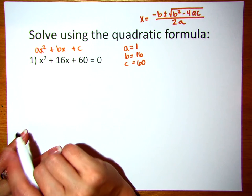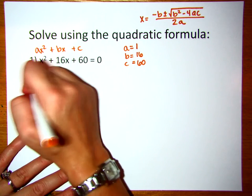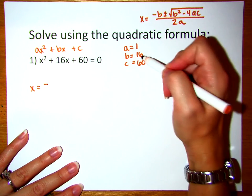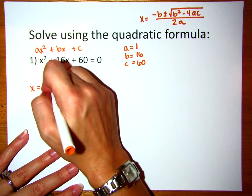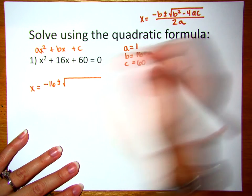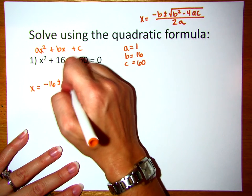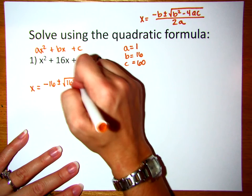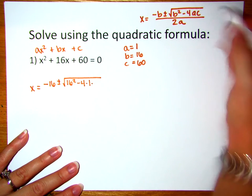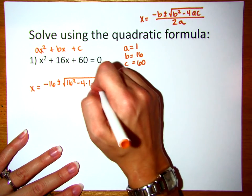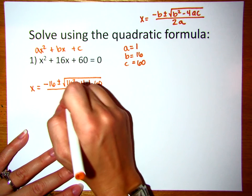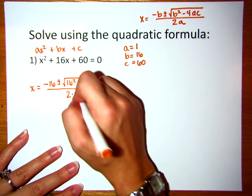We're going to put that in the quadratic formula. So x is going to equal negative the value of b, so 16, plus or minus the square root of b squared — so we're going to do 16 squared — minus 4 times a, which is 1, times c, which is 60. And then all of that will be divided by 2 times a, which is 1 here.